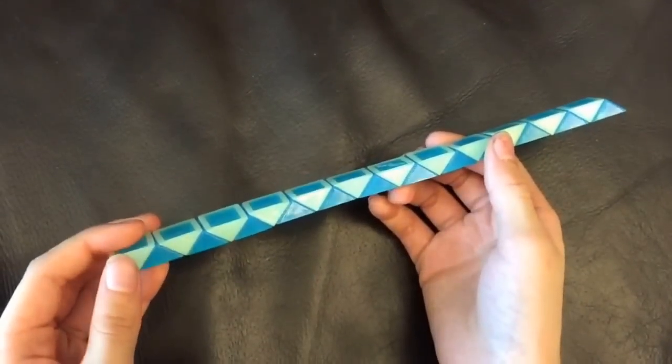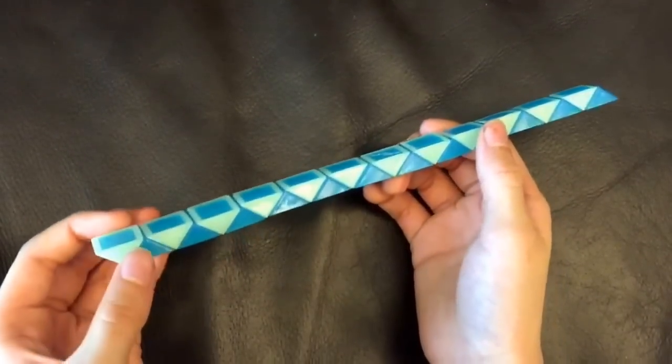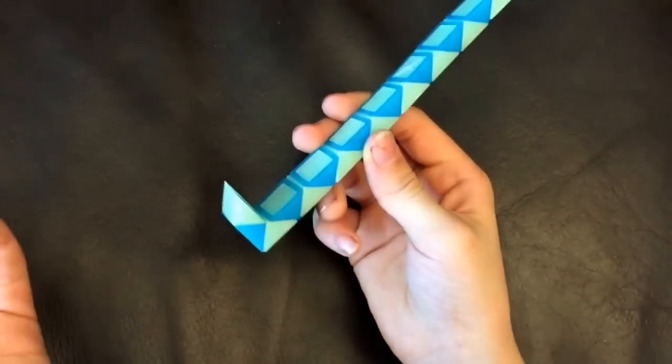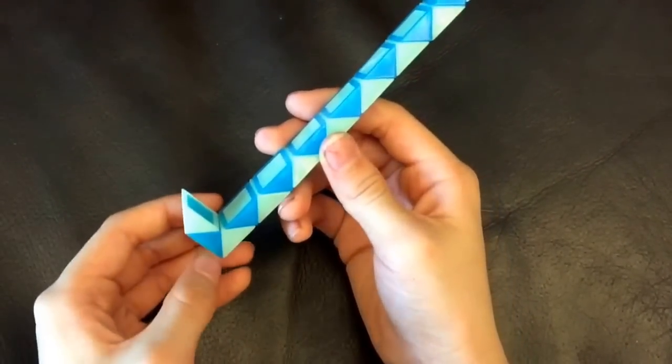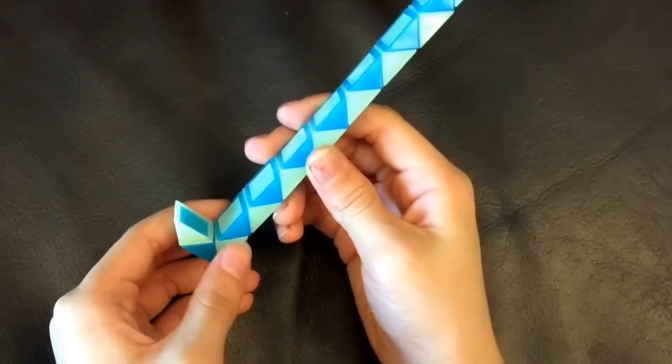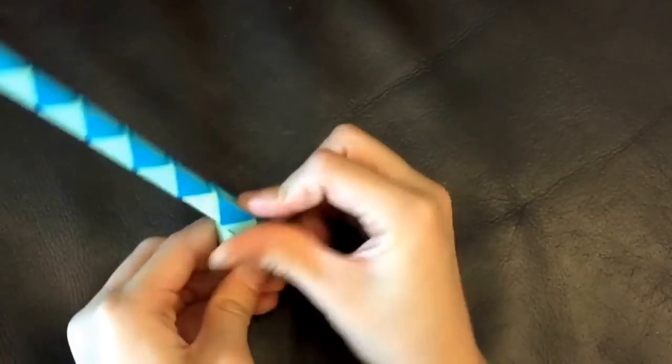So first, you're going to count one, two, and then this white one's going to go up. Then this blue one is going to go up.